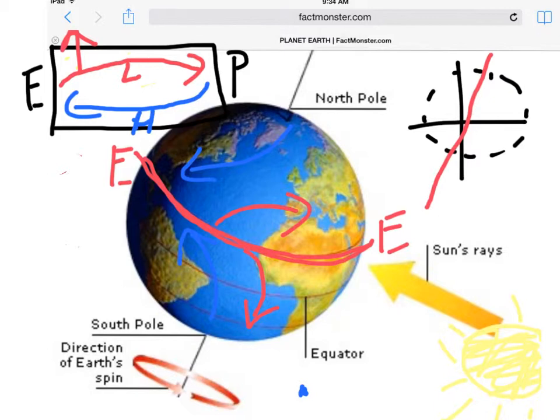But because of the Earth's tilt on its axis and the Earth's rotation, the winds in the northern hemisphere are always bending to the right and the winds in the southern hemisphere are always bending to the left. This is called the Coriolis effect because a gentleman named Coriolis came up with this idea.